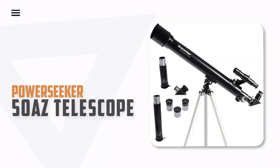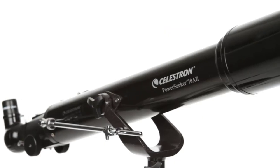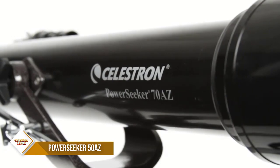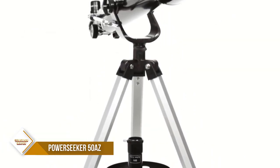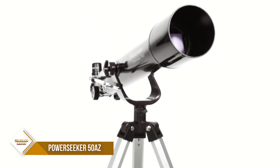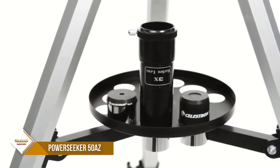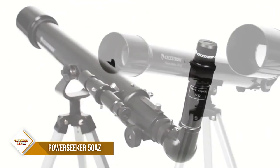Number 1. Celestron PowerSeeker 50AZ Telescope. The Celestron PowerSeeker 50AZ is the perfect telescope for beginner stargazers looking for an easy-to-use yet powerful telescope. It features a yoke mount with a slow-motion altitude rod for smooth and accurate pointing, and is compact, lightweight, and portable, making it great for taking to your favorite campsite or dark-sky observing site.